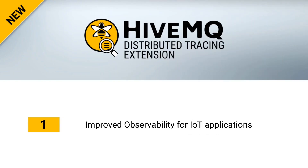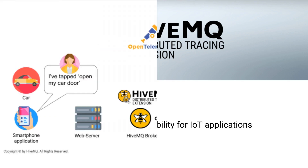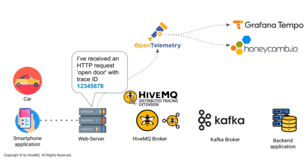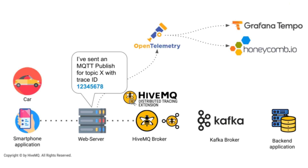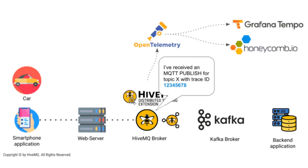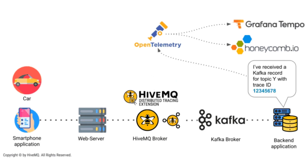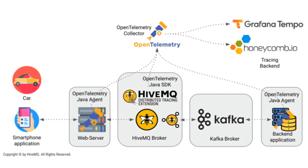The first enhancement is observability through the Distributed Tracing extension. HiveMQ has developed an extension that enables end-to-end message tracking, giving customers a high level of observability for all of their IoT applications. HiveMQ has instrumented its broker and the Kafka extension, enabling it to capture and expose tracing information as defined by the OpenTelemetry specification. We are the first full-featured MQTT broker to implement the OpenTelemetry specification and thus provide complete transparency for every transaction that uses the HiveMQ MQTT broker.